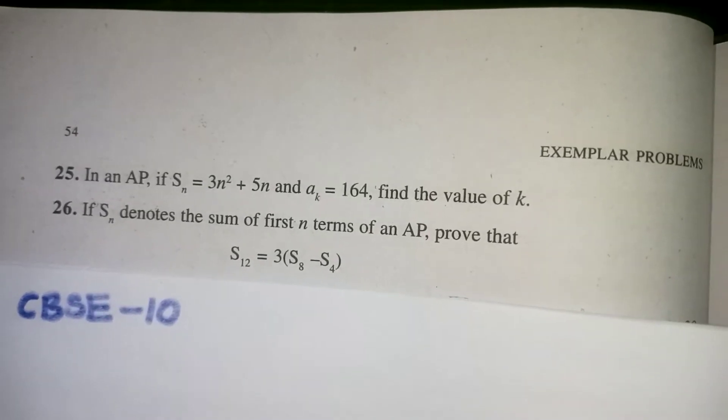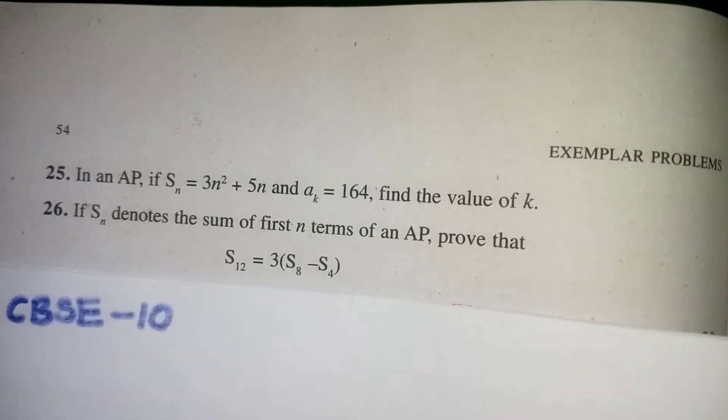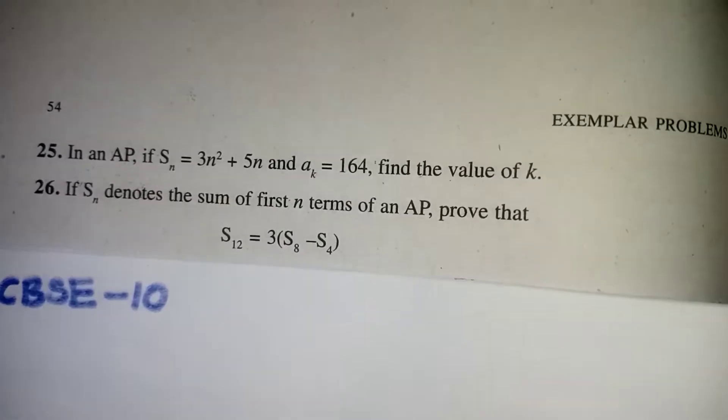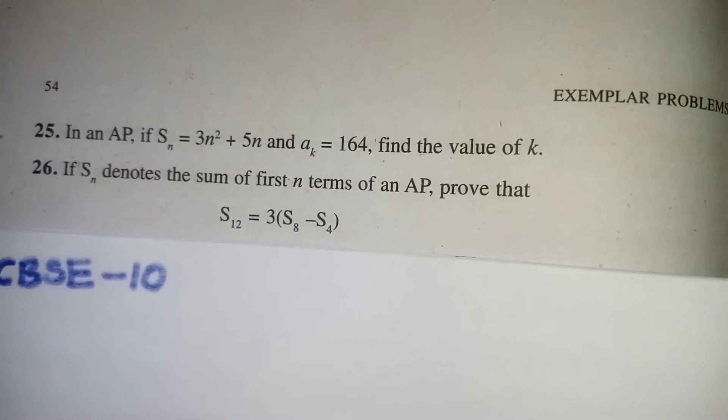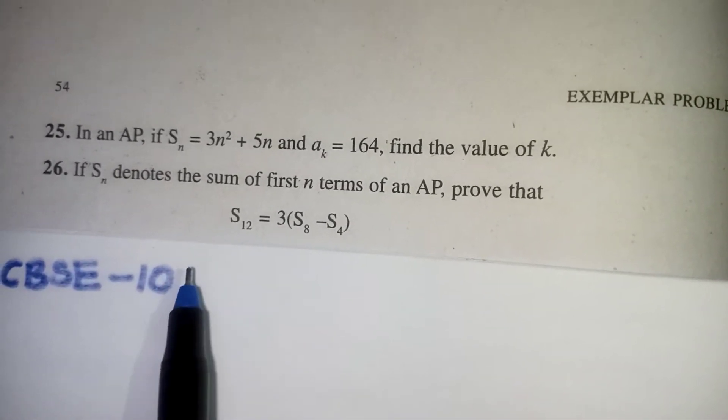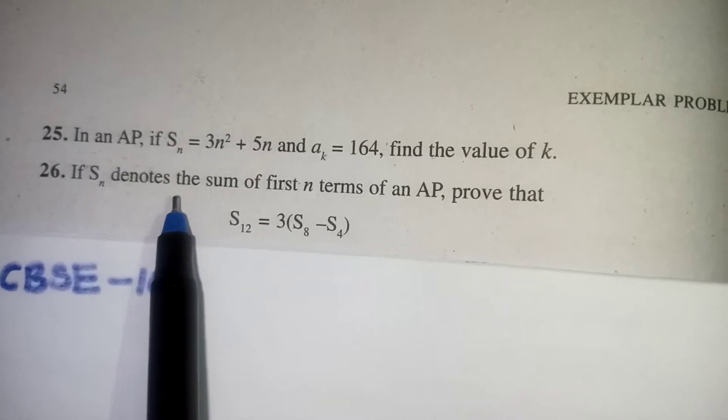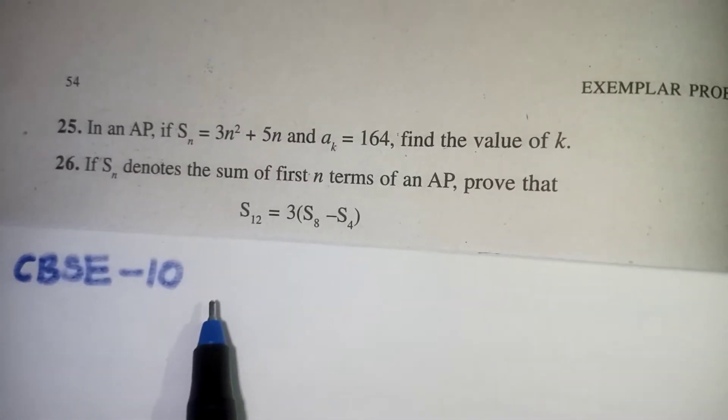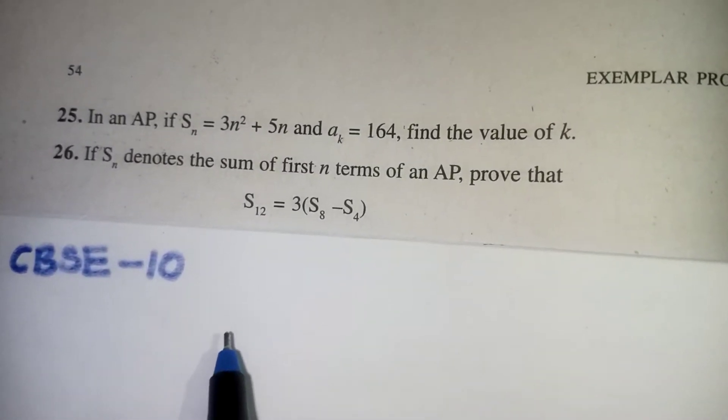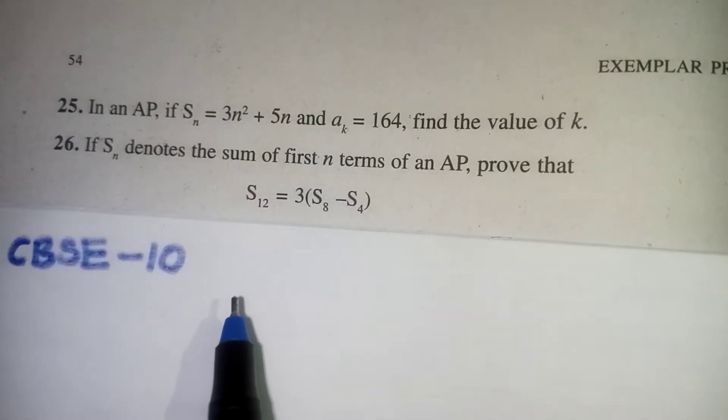Hi students, in this video we are going to learn CBSE class 10 arithmetic progression important questions. Now look at the first question they have given us. In an AP, if SN is equal to 3N squared plus 5N and AK is 164, then find the value of K is our question.